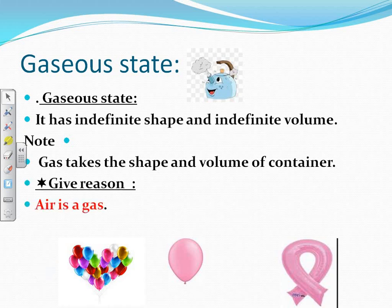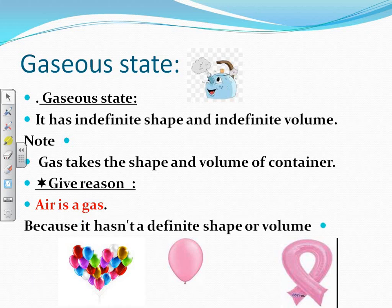Give reason: Air is a gas. Why is air a gas? Because it does not have a definite shape or volume.